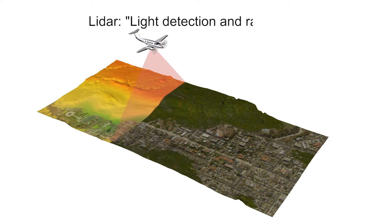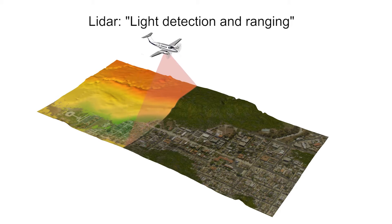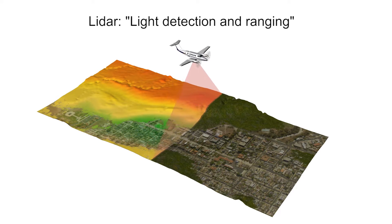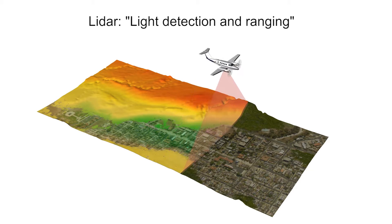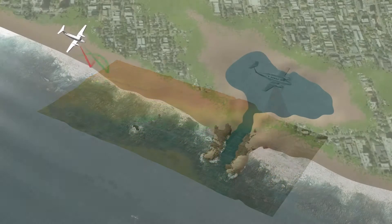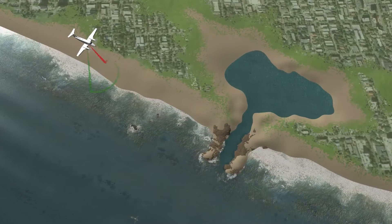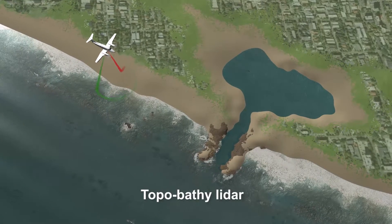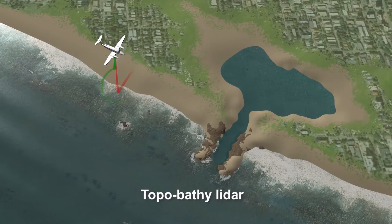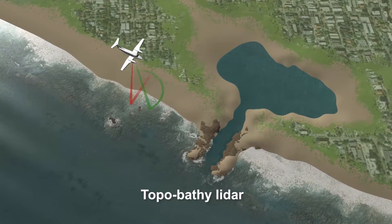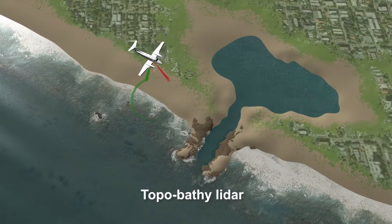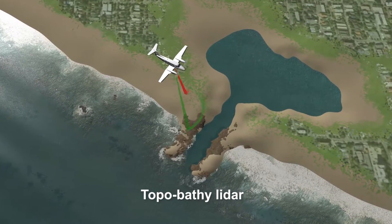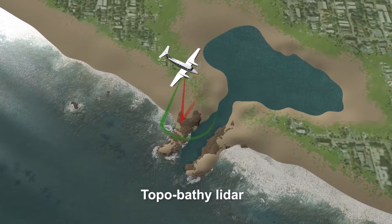LIDAR, which stands for light detection and ranging, is a remote sensing method that uses a laser to measure distances to a surface. NGS uses a unique type of sensor called topobathy lidar. It collects wide swaths of elevation data on both land, or topography, and in shallow water areas, or bathymetry.